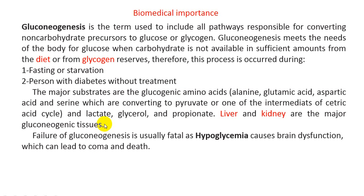The main sites inside the human body for gluconeogenesis are the liver and kidney — these are the major gluconeogenic tissues. Failure of gluconeogenesis is usually fatal, as this is a very important process.